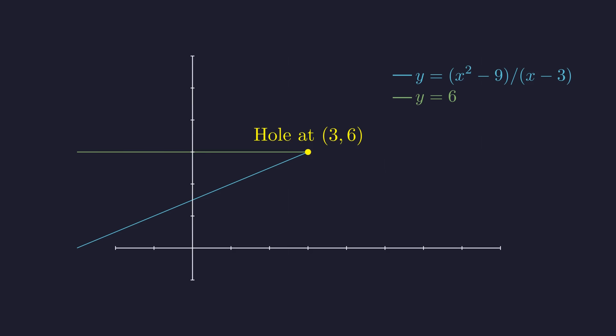It looks like the lines should intersect, but because of that hole, there's no actual intersection. No intersection means no solution. The graph confirms what the algebra was telling us all along. This equation has no answer.